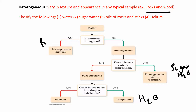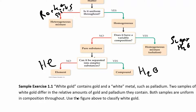A pile of rocks and sticks is not uniform throughout, so that's a heterogeneous mixture. Helium — think of a helium balloon — is homogeneous throughout, has no variable composition, so it's a pure substance. Can it be separated into simpler substances? No, because helium is an element. Now pause the video and try to classify white gold, which is a mixture of gold and a white metal like palladium.